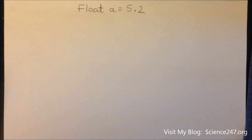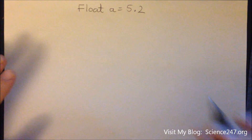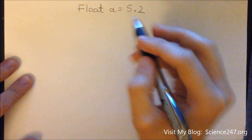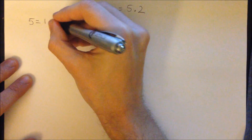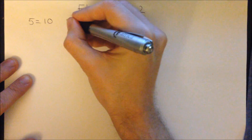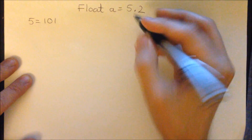Converting 5.2 into the floating point representation. Number 5 can be represented in binary as 1, 0, 1.